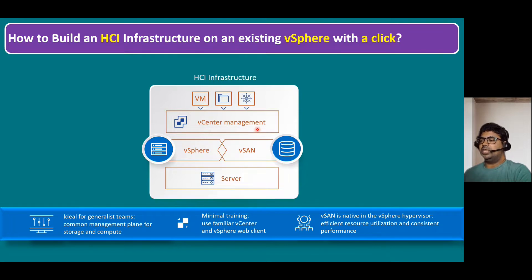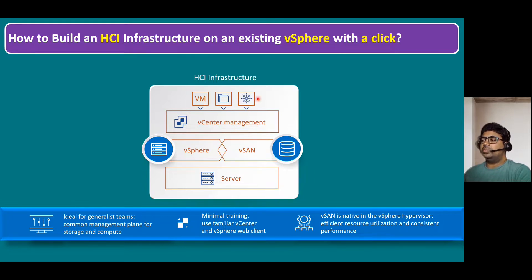Management is still through vCenter Server, and we can configure multiple virtual machines, create a content library, and also configure Kubernetes solutions like vSphere with Tanzu. Just as we added the vSAN license, if we add a Tanzu license — Tanzu Basic, Standard, or Advanced — based on customer requirement, the vSphere HCI solution will also allow you to configure Tanzu Kubernetes Clusters, in short form TKC. So we can configure multiple TKCs.